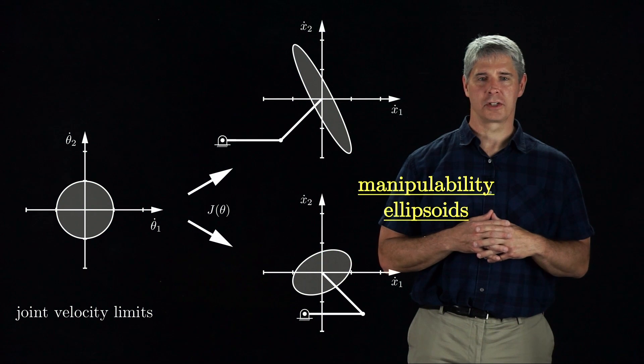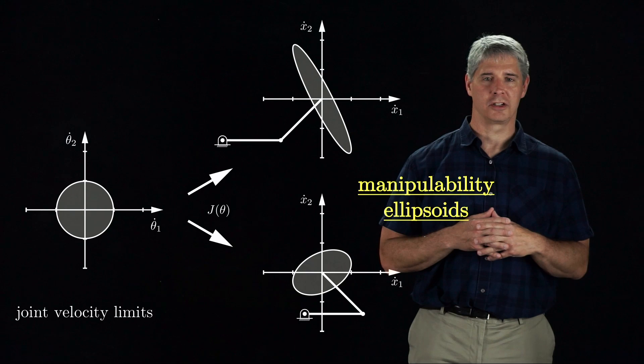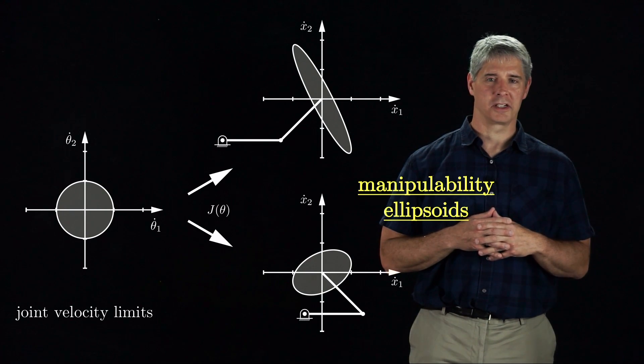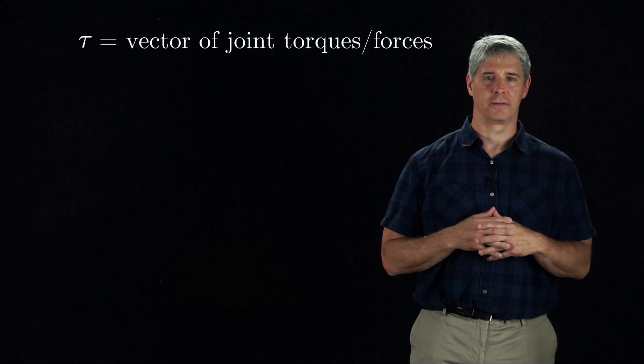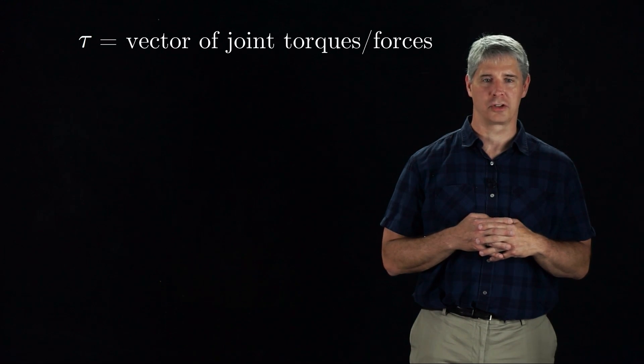The Jacobian also relates forces at the end effector to forces and torques at the joints. To find this relationship, let tau be the vector of joint torques and forces generated by motors at revolute and prismatic joints, respectively.